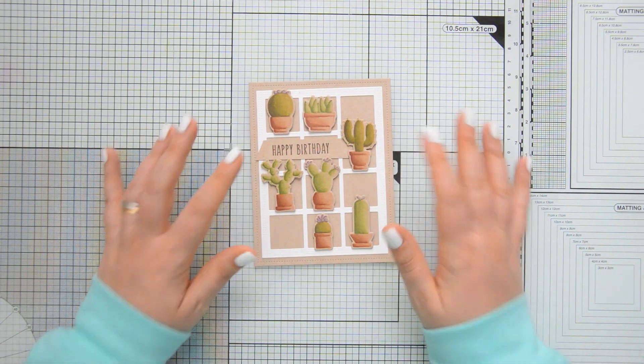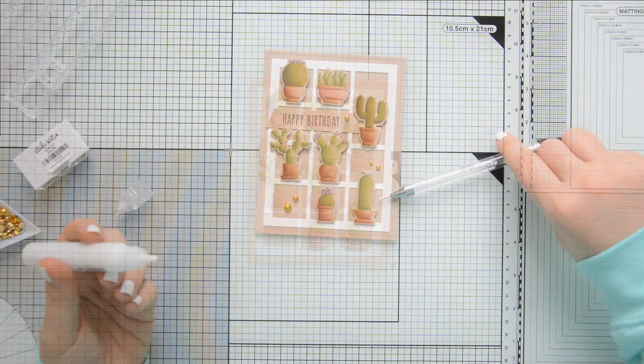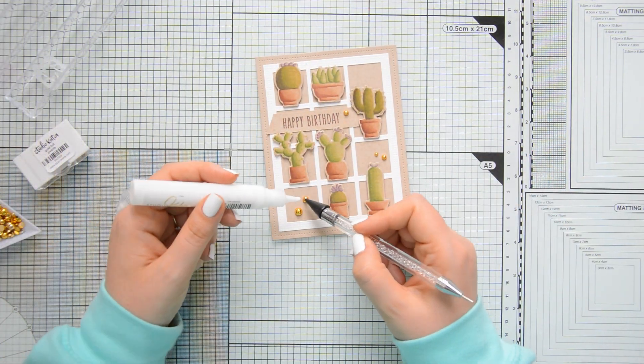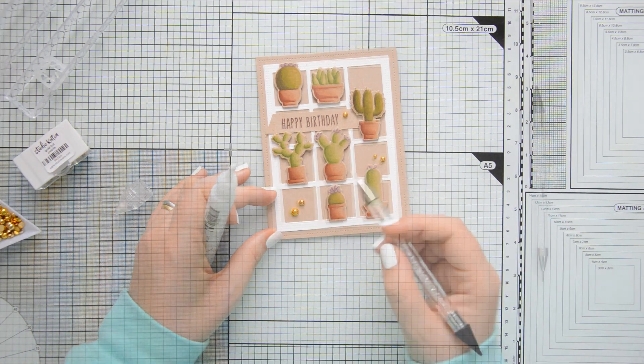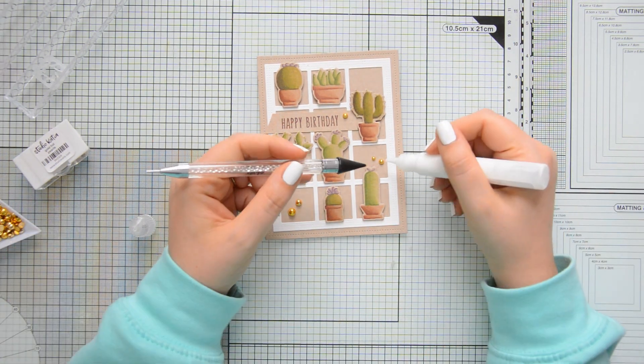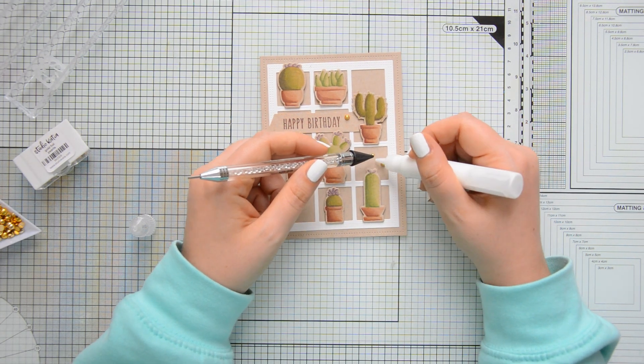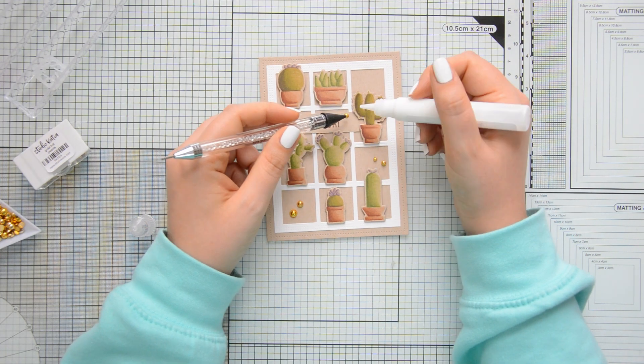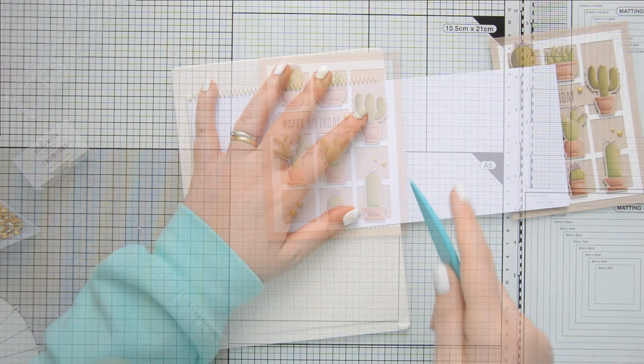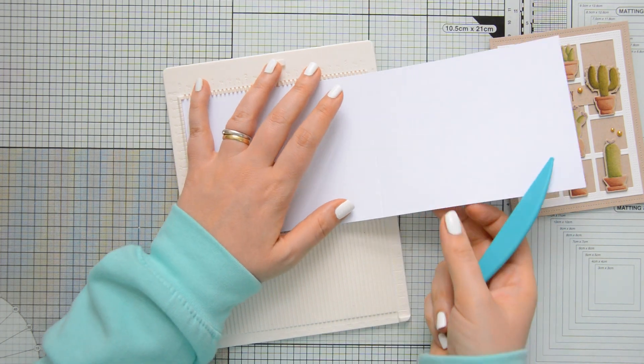At this point it was time to add some finishing touches, and I wanted to keep the card pretty simple, so the only thing that I added are these gold foiled pearls by Studio Katia, which I'm gluing down with my embellishment wand and Studio Katia glue. I think that with or without pearls, this design would work well for a masculine card too.